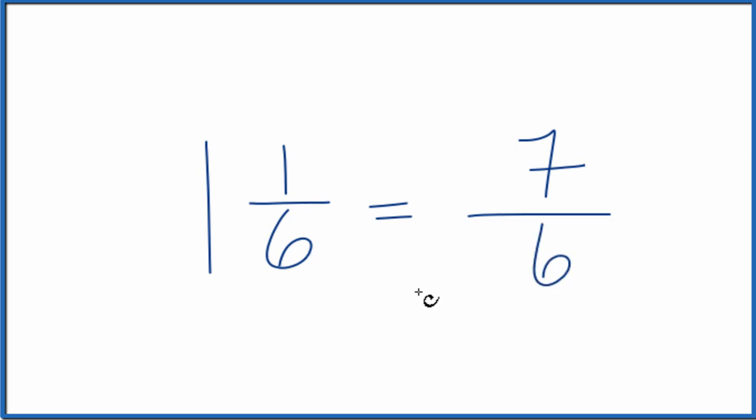1 and 1/6, the mixed number, equals the improper fraction 7/6, or you could call it 7 over 6.